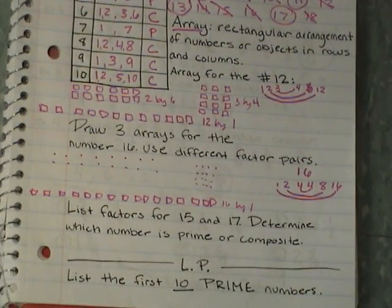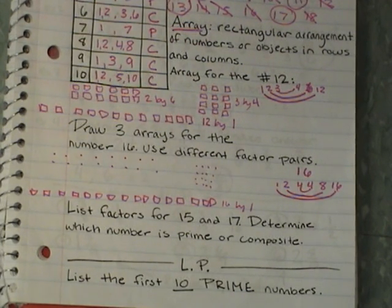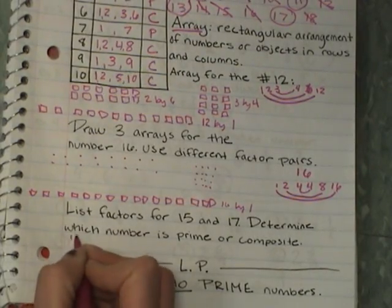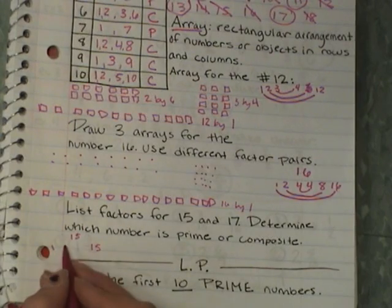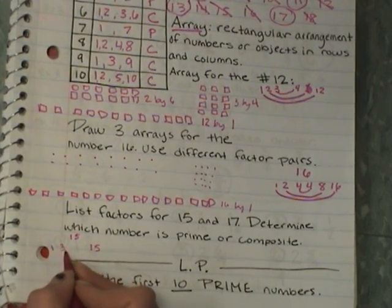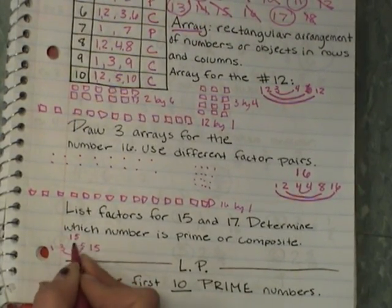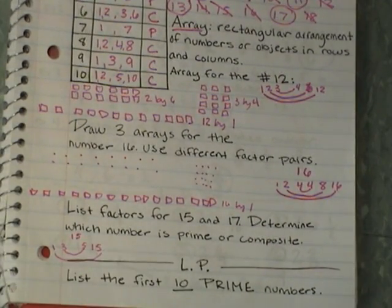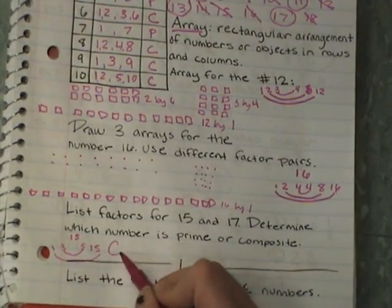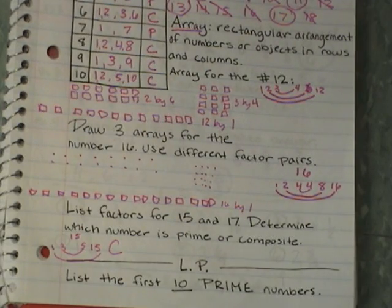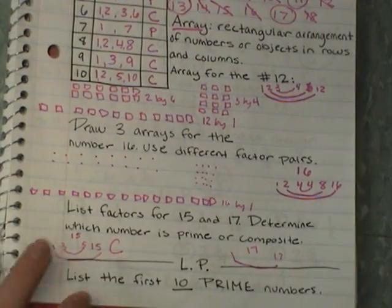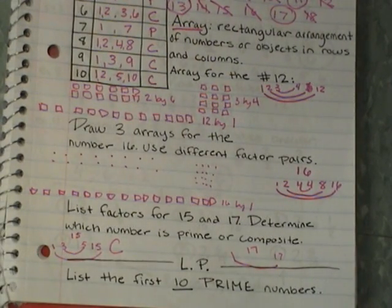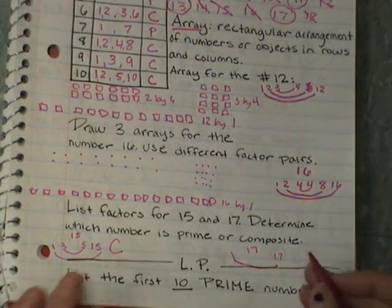The last example says: list the factors for 15 and 17, then determine which number is prime and which is composite. For 15: factors are 1, 3, and 5. This is going to be composite because I have more than 2 factors. For 17: 1 fits in, 17 fits in. Does 2, 3, 4, 5, 6, 7, 8 fit in? Nope. So this is going to be prime.